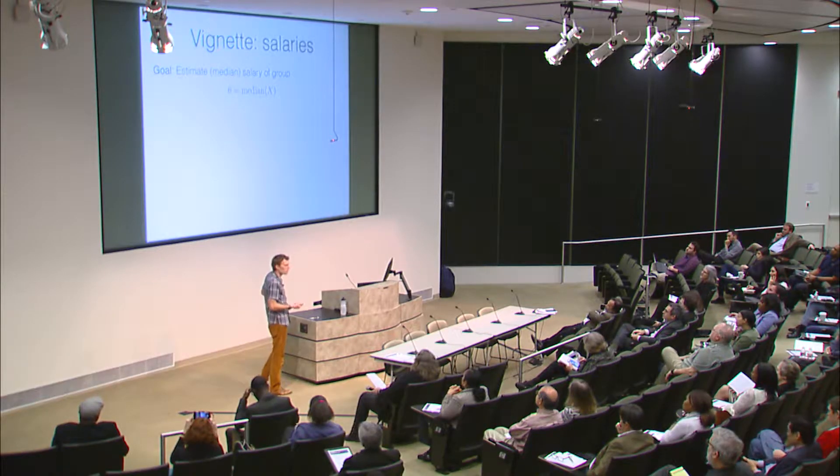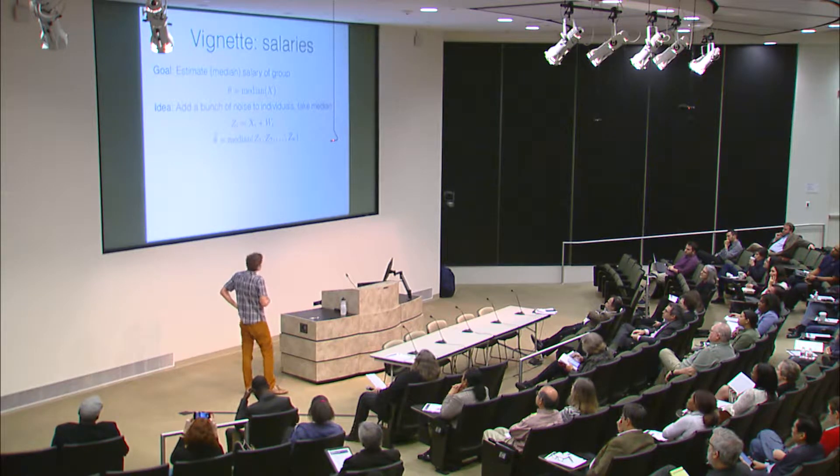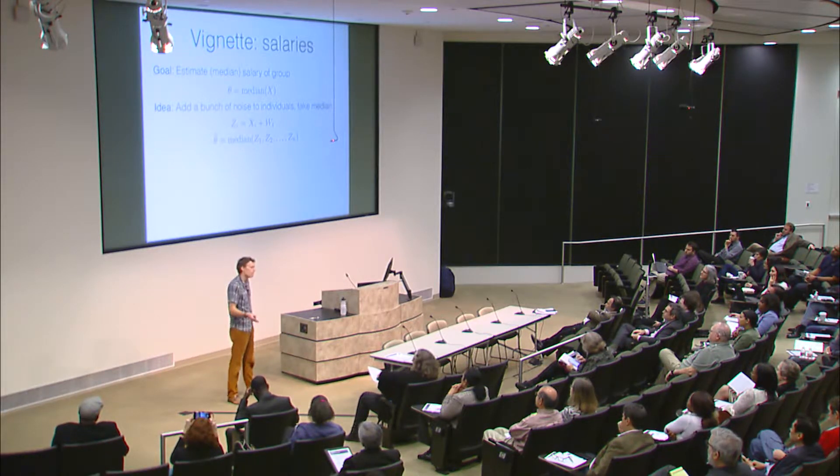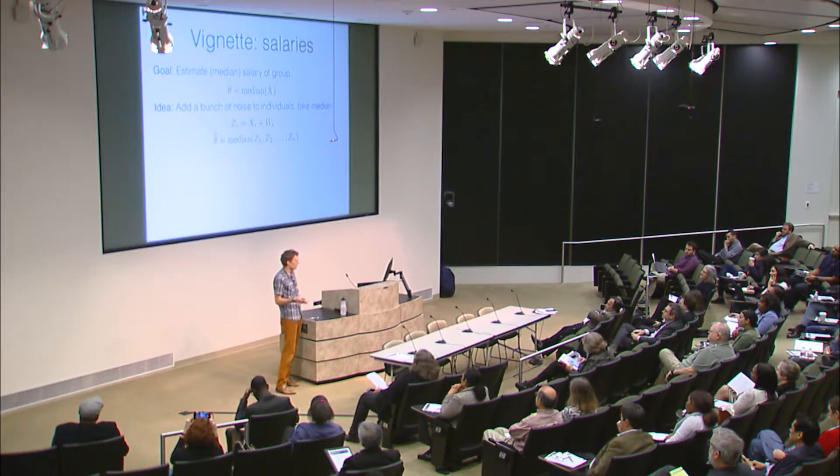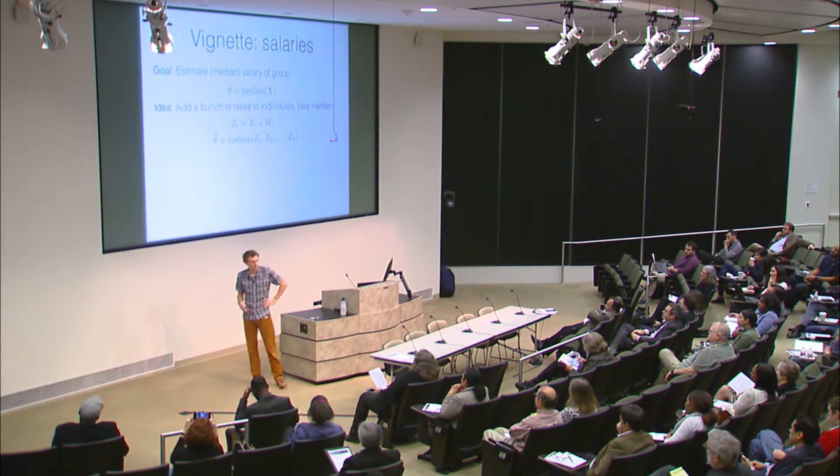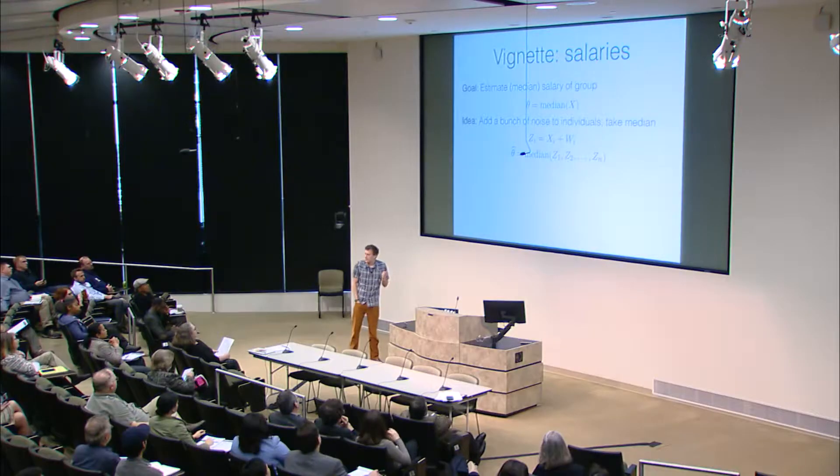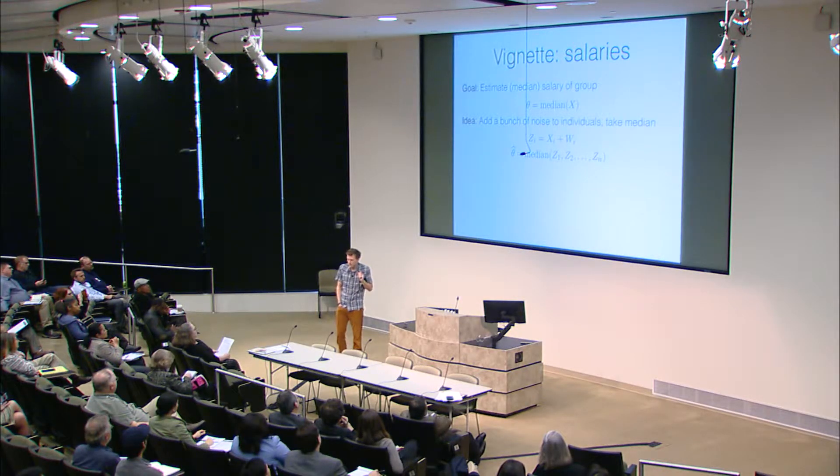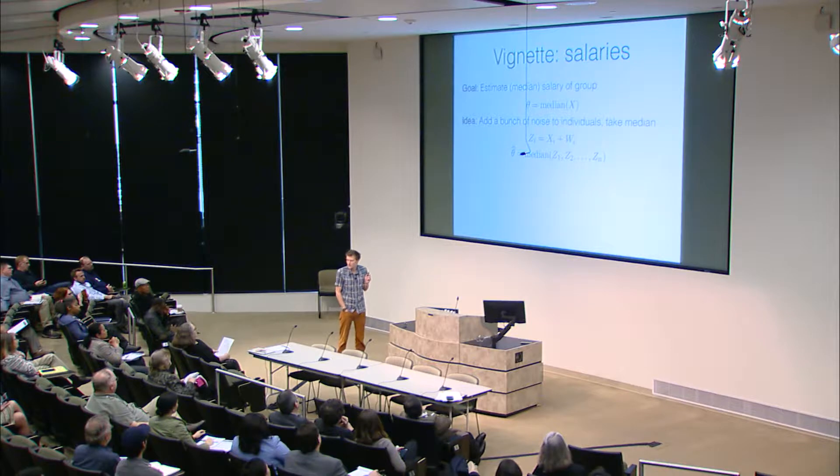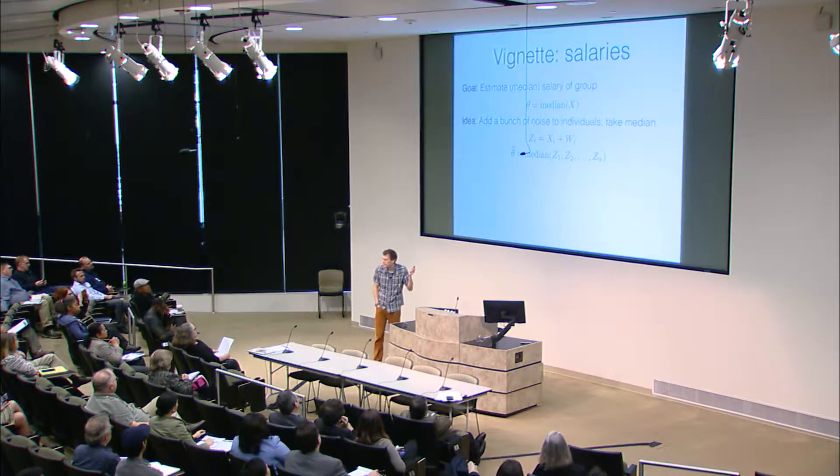Well, so the first thing you might do, say, okay, I'm going to just take everybody's salary and I'm going to add a bunch of noise to it. And then I'm going to take the median of that resulting thing. That seems reasonable. Like, my salary is whatever, $100,000. I'm going to add a bunch of noise to that $100,000 and then I'll let you see, $100,000 plus or minus a whole bunch of noise. And then I don't care. That's a fine idea. It turns out it's a terrible idea. That won't work at all. You're never going to get the right answer with that. So here's a much better idea.